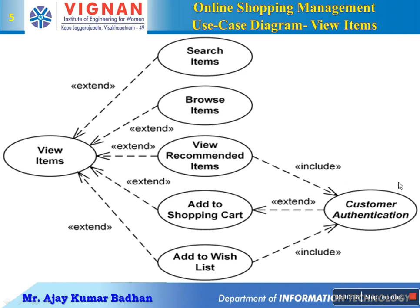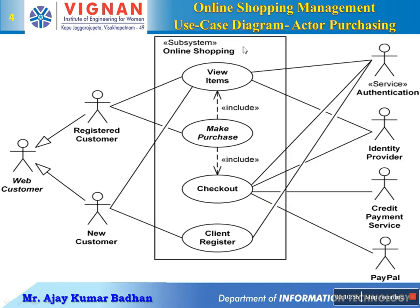Customer authentication is required for view recommendations and add to wish list — these two specifically require authentication. However, this authentication is already done at the beginning when you log in to the website with your username and password. So when you click on wish list or add to it, it can directly proceed. The authentication done at login covers these operations, which is what is represented in this diagram.